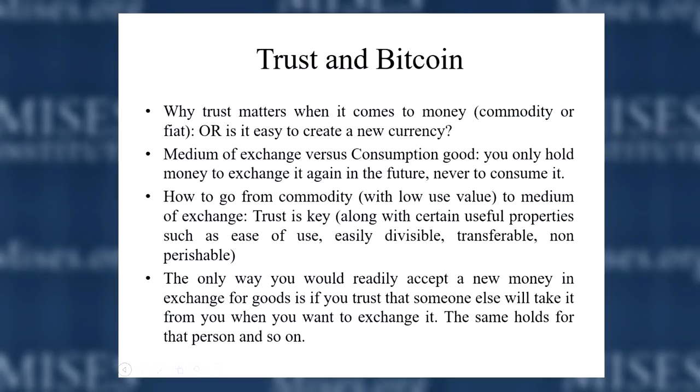You can have the most perfect currency or commodity — gold — but just having something with perfect properties does not ensure it actually gets used as a medium of exchange or becomes a currency. What you need is for people to voluntarily trade with it, trust it, and use it as a medium of exchange. So the question becomes: why are people using and trusting Bitcoin in the first place? Trust is crucial when it comes to any medium of exchange emerging.